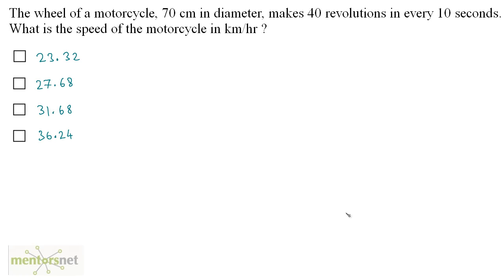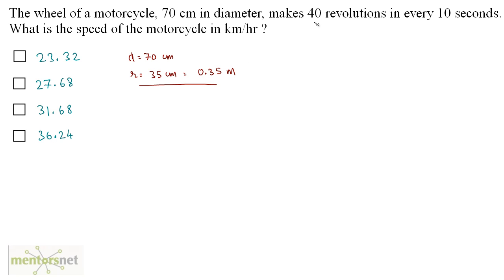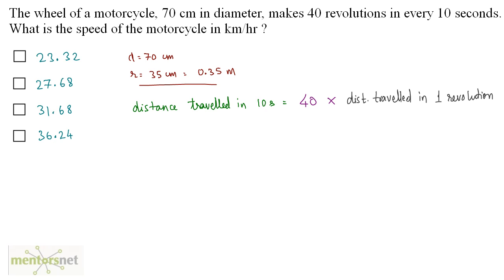The wheel of a motorcycle 70 cm in diameter makes 40 revolutions in every 10 seconds. What is the speed of the motorcycle in km per hour? The diameter of this wheel is 70 cm, so the radius will be equal to half of the diameter, that is 35 cm. Converting to meters, this will be 0.35 meters. This wheel makes 40 revolutions in every 10 seconds.